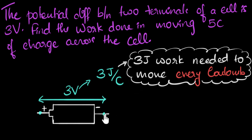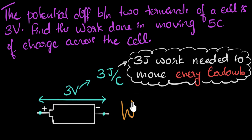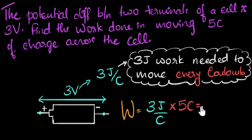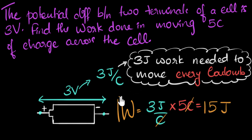One coulomb from one point to another requires three joules of work. If we had two coulombs, it would be twice the amount. If we had three coulombs, it would be thrice the amount. So to move five coulombs, it would be five times the amount. Work done would be three joules per coulomb — three joules for every coulomb — but since we are moving five coulombs, we multiply by five. The coulombs cancel, giving us 15 joules. So we need to do 15 joules of work to move five coulombs across.